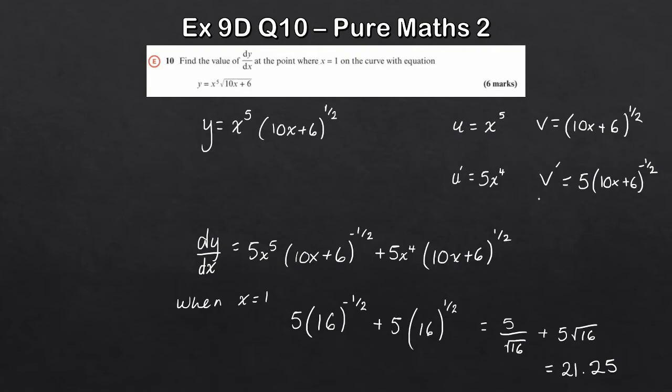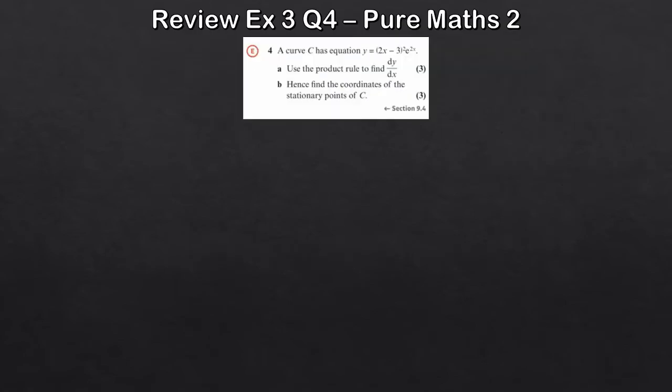So the method is: write u, write v, differentiate both, then apply the product rule, substituting in the x-coordinate you're given. That's that question done.